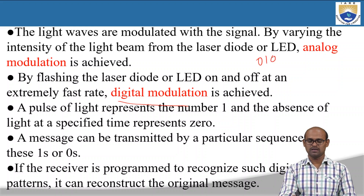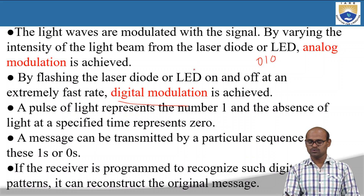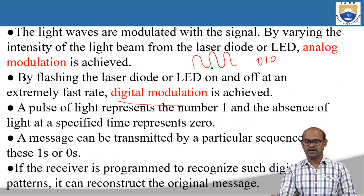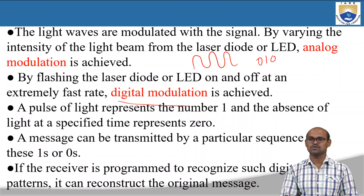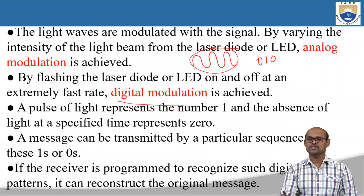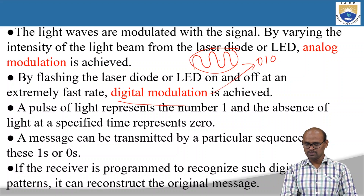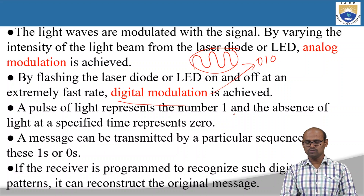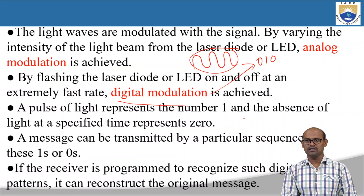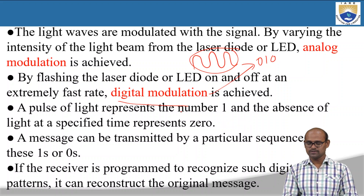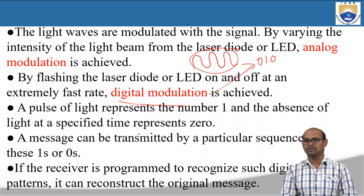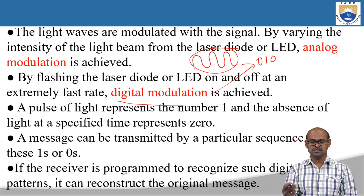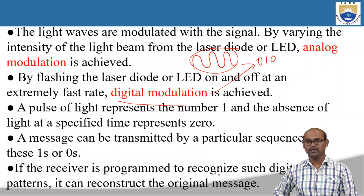Analog modulation can be frequency modulation or amplitude modulation. Currently, analog modulation is replaced by digital modulation, where all the information is in the form of binary digits, 0s and 1s. A pulse of light represents the number 1, and the absence of light represents the number 0. The information — audio or video signal — is converted into binary digits. A message can be transmitted by a particular sequence of 0s and 1s. If the receiver is programmed to recognize these digital patterns, it can reconstruct the original information given as input to the transmitter.